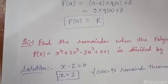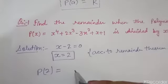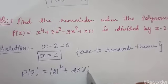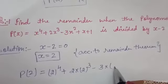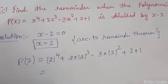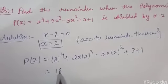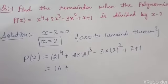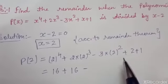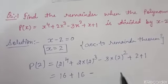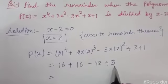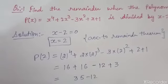Now find the value of the polynomial at X equal to 2. Replace X by 2: we get 2 to the power 4 plus 2 into 2 to the power 3 minus 3 into 2 to the power 2 plus 2 plus 1. Solving this: 2 to the power 4 is 16, 2 to the power 3 is 8 and 8 into 2 is 16, 2 to the power 2 is 4 and 4 into 3 is 12, and 2 plus 1 is 3. Now adding: 16 plus 16 plus 3 is 35, minus 12, that is 23.